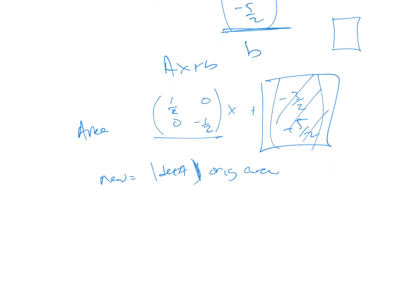So I know the new area is equal to the determinant of A times the original area. And so the determinant of A is simply going to be negative a quarter, subtract the zero times the original area. And I'll let you figure out the original area, but that is the key to here. You do not need to worry about the translation. You only need to worry about the matrix A.